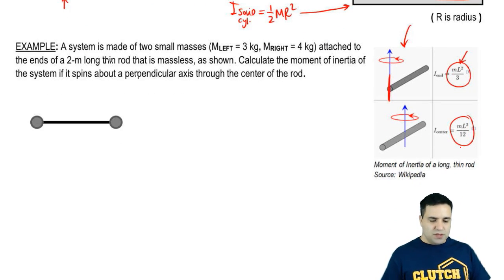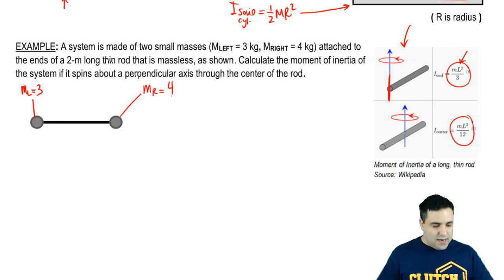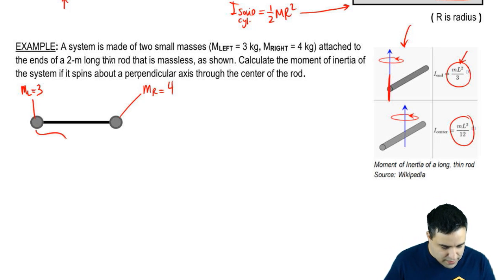So we're going to do this quick example here so you see how this works. It says a system is made of two small masses. The one on the left, m left equals three, and mass on the right, m right equals four. And they are attached to the ends of a two-meter-long thin rod. So length equals two meters.